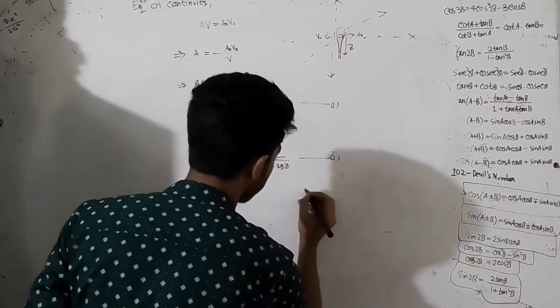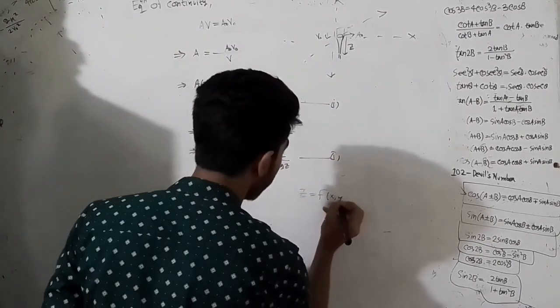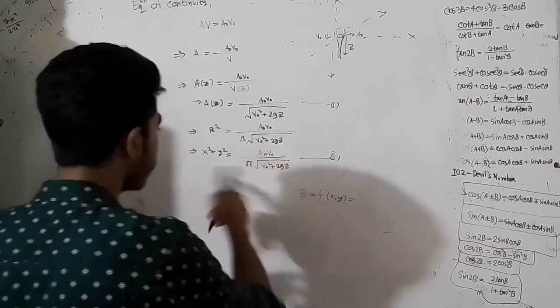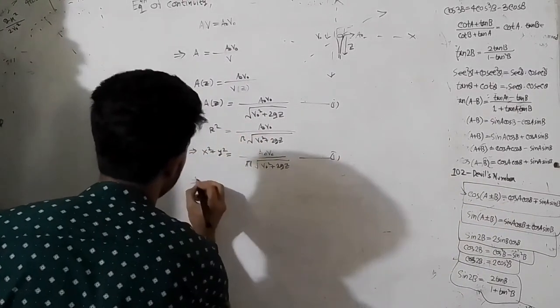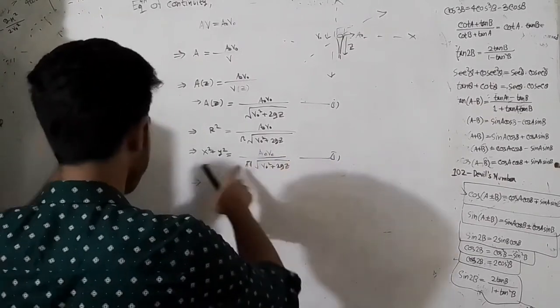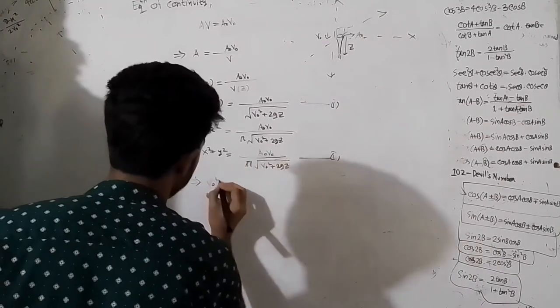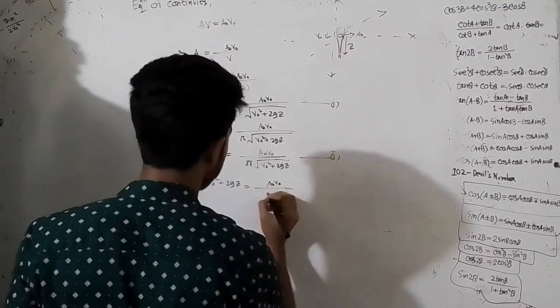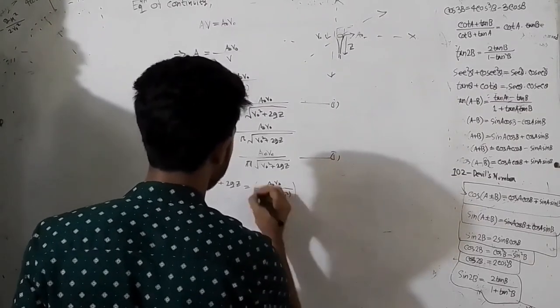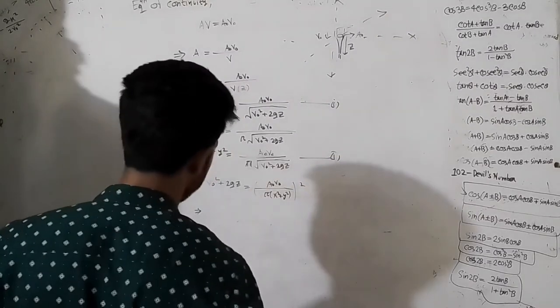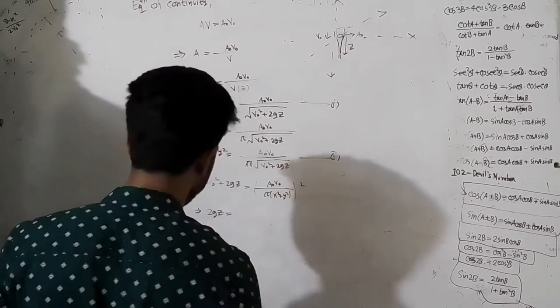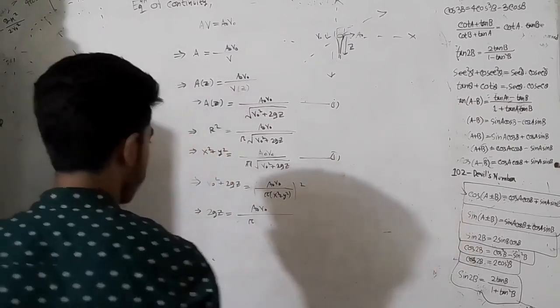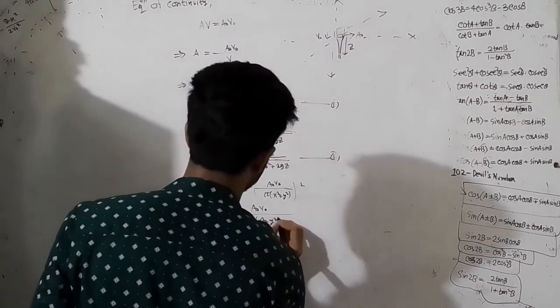Function z, function is f, function input. So z equal to z equal to z equal to z is equal to y, x square, y square, x square.